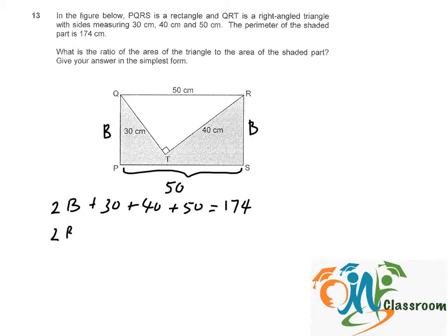That means 2 breadth would be 174 minus 30, minus 40, minus 50, which will give us 54. So the breadth of the rectangle should be 54 divided by 2, which equals 27cm.